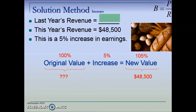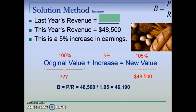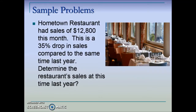We'll use our percent formula to calculate base by taking part divided by rate, but we need to do a little calculation on the percentages. The base is always 100 percent; the problem tells us we have a 5 percent increase, so adding those together we end up with a rate of 105 percent. Plugging in those values and converting the percent to a decimal, last year's revenue is $46,190.